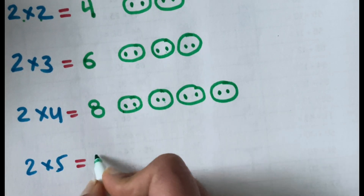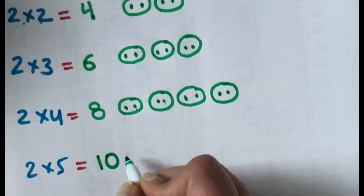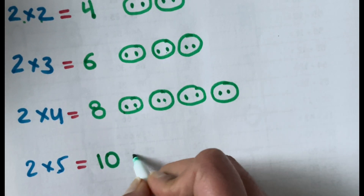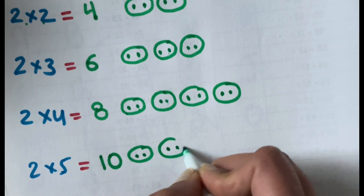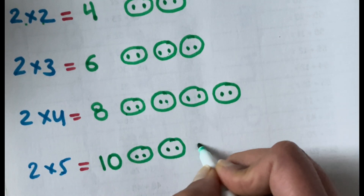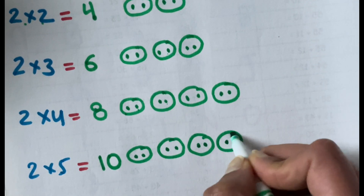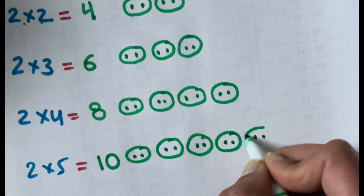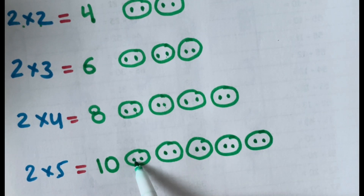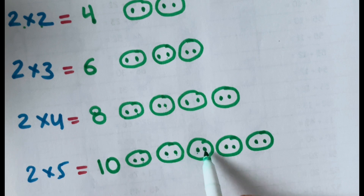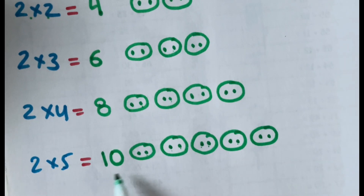2 times 5 is 10. That means 5 groups of 2. 1, 2 — group of 2. 3rd group of 2. 4th group of 2. And 5th group of 2. That is 1, 2, 3, 4, 5, 6, 7, 8, 9 and 10.